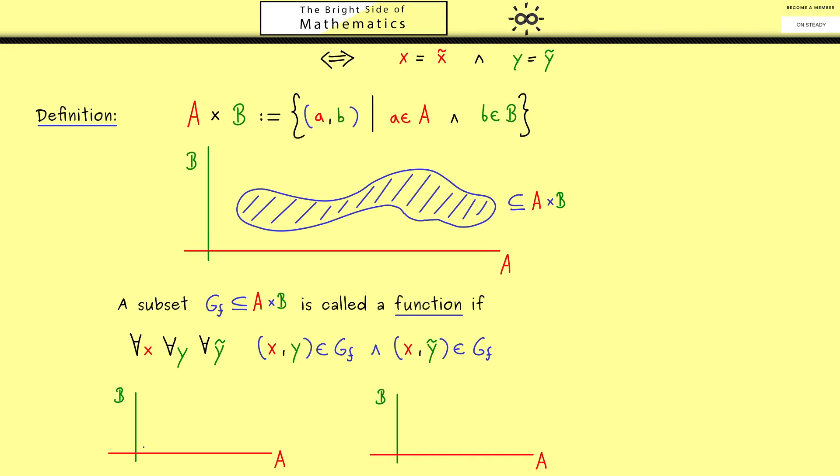So the subset should be more like a one-dimensional line in the plane. Also, it shouldn't look like this on the right-hand side, because if you fix an x here, you see we have two corresponding y's. So you see what we need in the definition is that this assumption brings us to y is equal to y tilde.